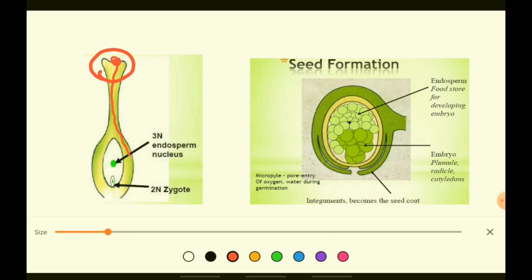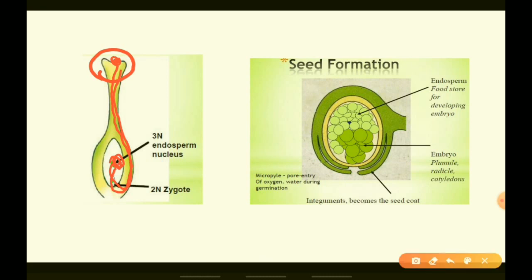The pollen tube will enter through the stigma into the style and then into the ovule. From this pollen tube, the male gametes will enter into the ovule and fertilize the egg cell.